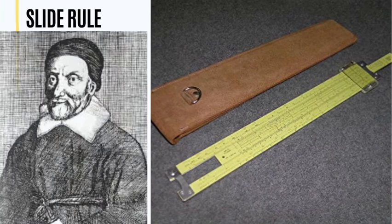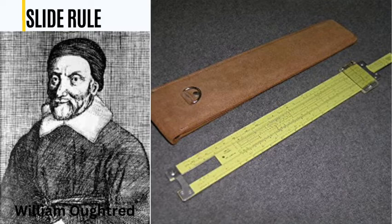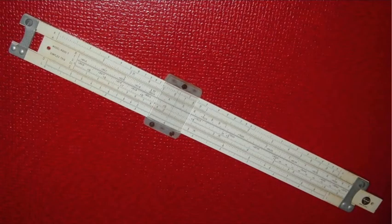Moving forward, we have the slide rule. The slide rule was developed or invented by William Oughtred in the year 1632. The slide rule is a mechanical analog computer. In its most basic form, the slide rule uses two logarithmic scales to allow rapid multiplication and division of numbers.